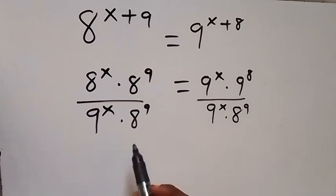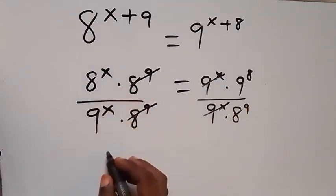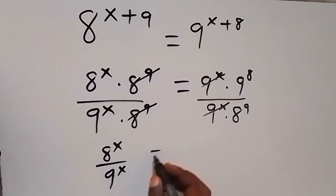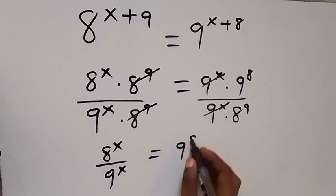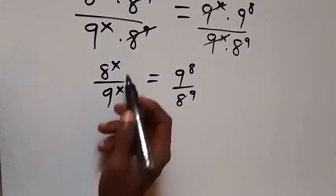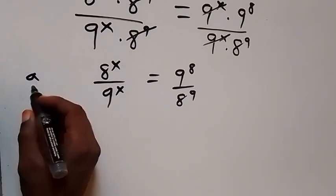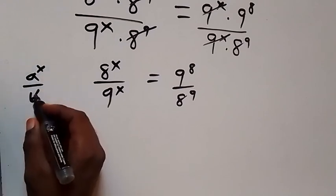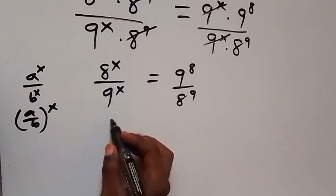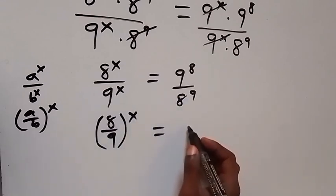So 8 raised to power 9 cancels on this side and 9 raised to power x cancels on the other side. What we have now is 8 raised to power x divided by 9 raised to power x, then equals to 9 raised to power 8 divided by 8 raised to power 9. From the law of indices, when we have a raised to power x over b raised to power x, we can write it together as a over b all raised to power x. So when we apply that here, we have 8 over 9 all raised to power x.